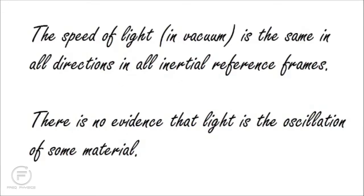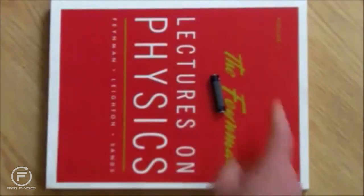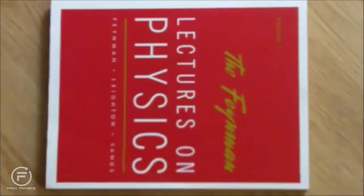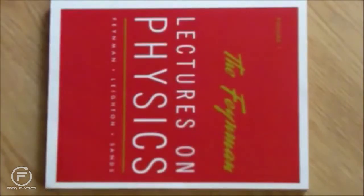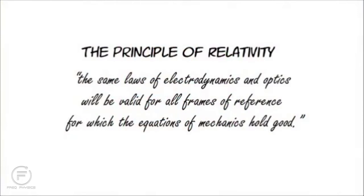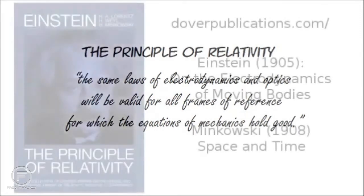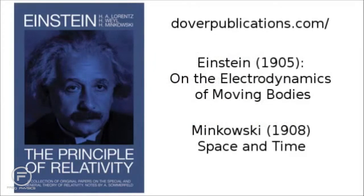The speed of light is the same in all directions in all inertial reference frames, and there is no evidence that light is the oscillation of some material. The term 'inertial reference frame' keeps coming up — that's a frame in which if I put something at rest, it stays at rest; if I push it, it moves with uniform velocity. That's true pretty much at the surface of the Earth in two directions corresponding to the ground, but not in the third direction corresponding to up and down, where the force of gravity makes it a non-inertial frame. Towards making sense of this, a young Albert Einstein proposed the principle of relativity: the same laws of electrodynamics and optics will be valid for all frames of reference for which the equations of mechanics hold good.